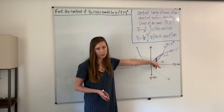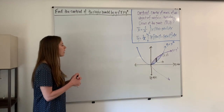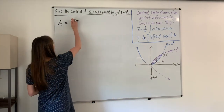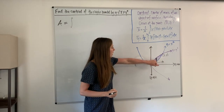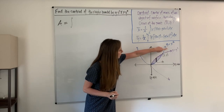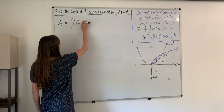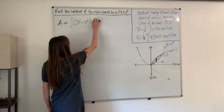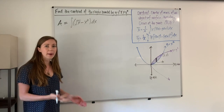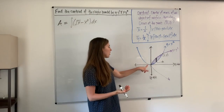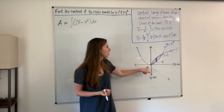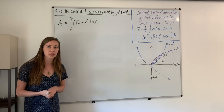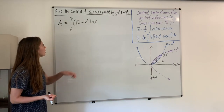The bottom point of the rectangle is at x squared, so the height is the square root of x minus x squared. To set up the area, we integrate the square root of x minus x squared times dx. For the bounds, we look at where the two parabolas intersect — they intersect at the origin and at the point (1, 1), so our x values run from zero to one.